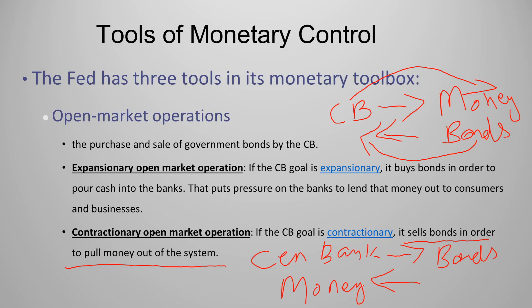Expansionary open market operations increase the money supply in the economy because the central bank is putting more money towards the commercial banks — giving more money to them in exchange for bonds. When commercial banks get more money, they increase the amount of loans, and the loaning process increases the money supply. In contractionary open market operations, the central bank sells bonds to commercial banks, who give money back to the central bank, decreasing the ability of commercial banks to increase money supply. This is the first monetary tool to increase or decrease money supply.